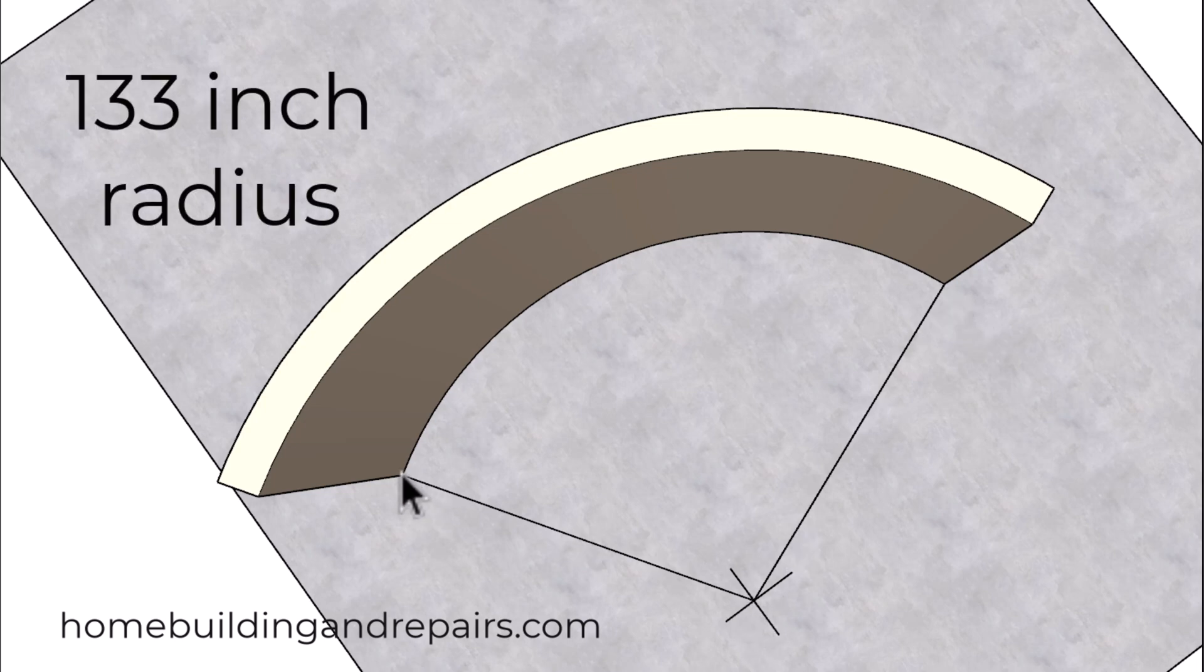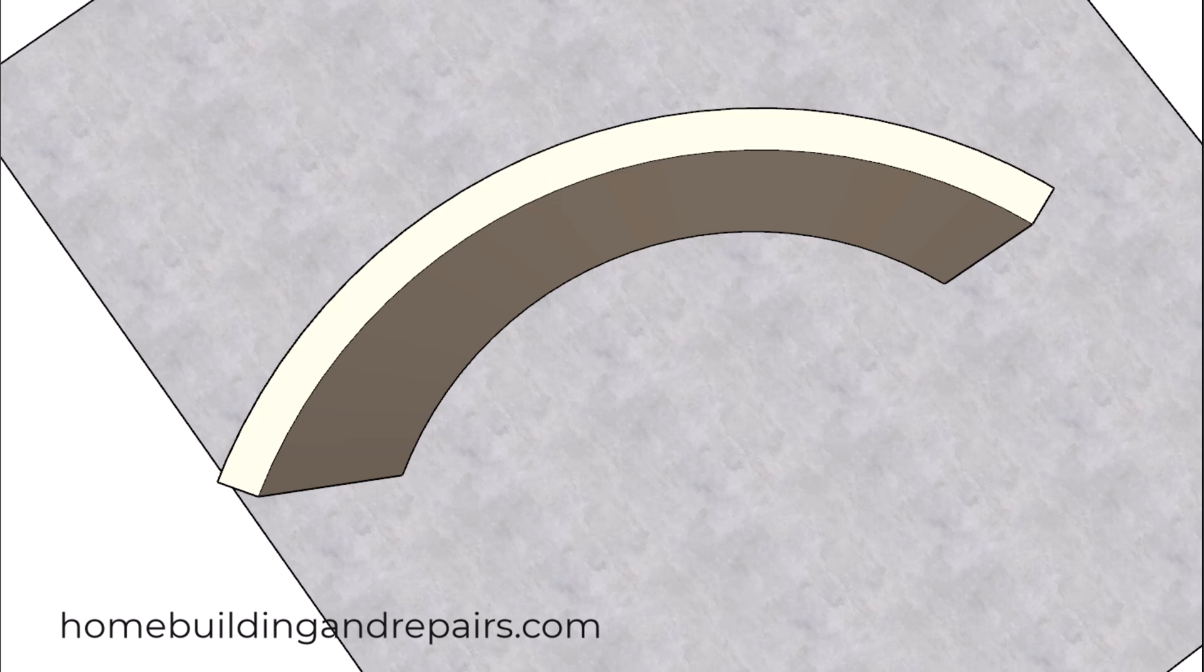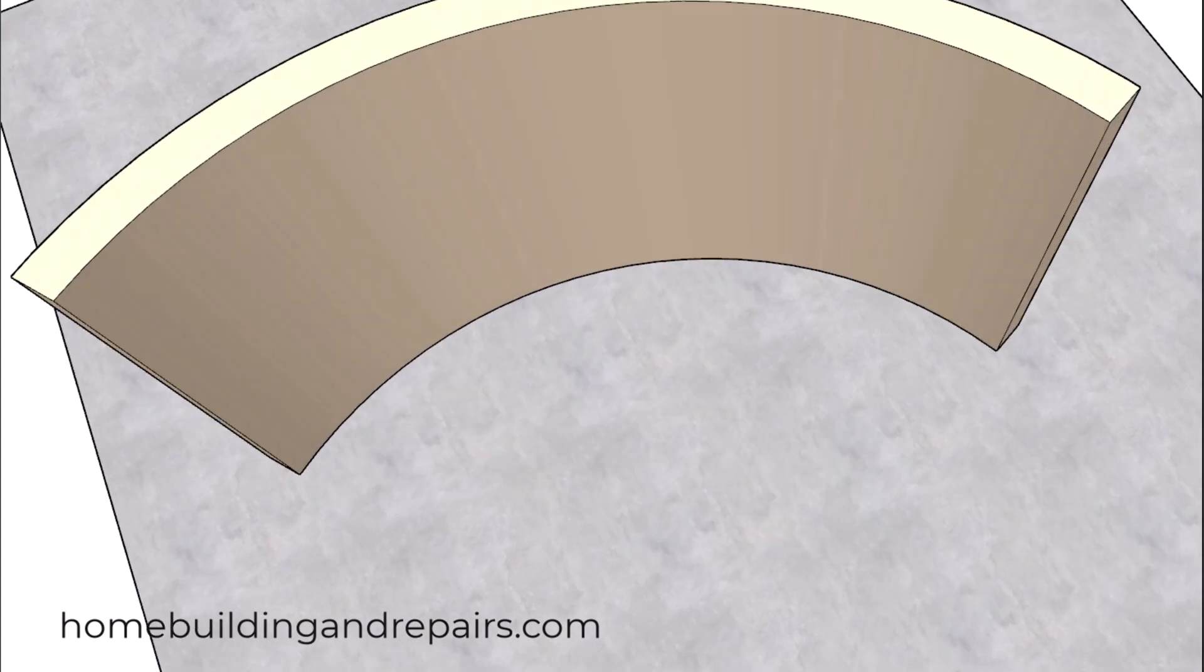You can double check these measurements by simply locating the center point and then checking random sections to make sure that they're all the same measurement. If not, then you're not going to have a perfect curve. And if you don't have a perfect curve, then you're not going to get accurate results using this formula.